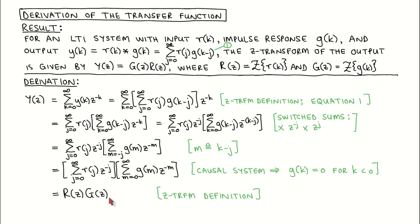This result shows us that we can interpret the transfer function of a system in two ways: as the Z-transform of the system's impulse response, or if we divide this result by R of Z, as the Z-transform of the output signal divided by the Z-transform of the input signal.